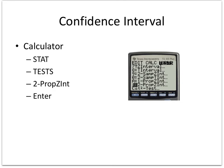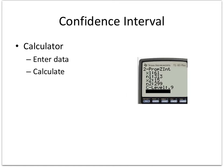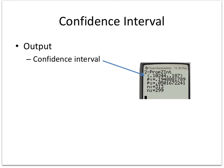We can also set up a confidence interval using STAT > TEST > 2-Prop Z-Interval. Our data should already still be entered. I'll use 0.9 for a 90% confidence interval. Here is the output for my interval.